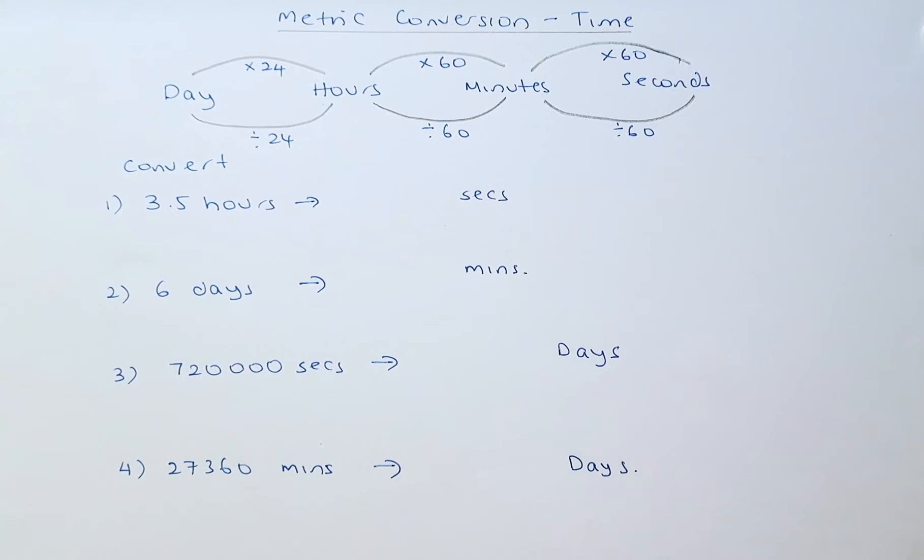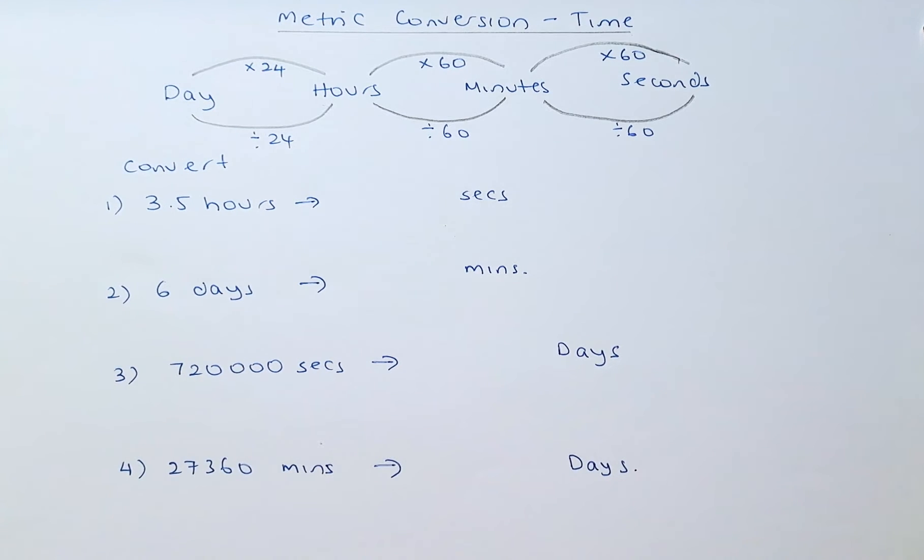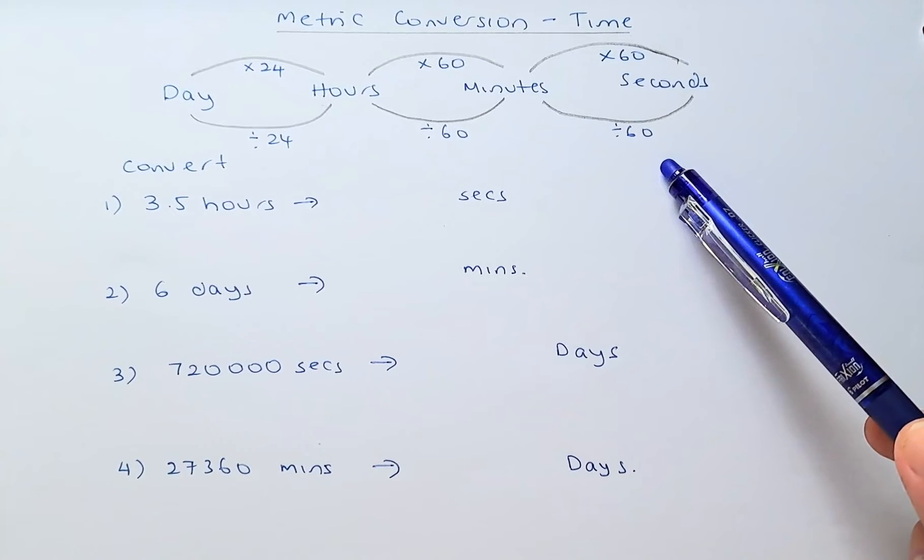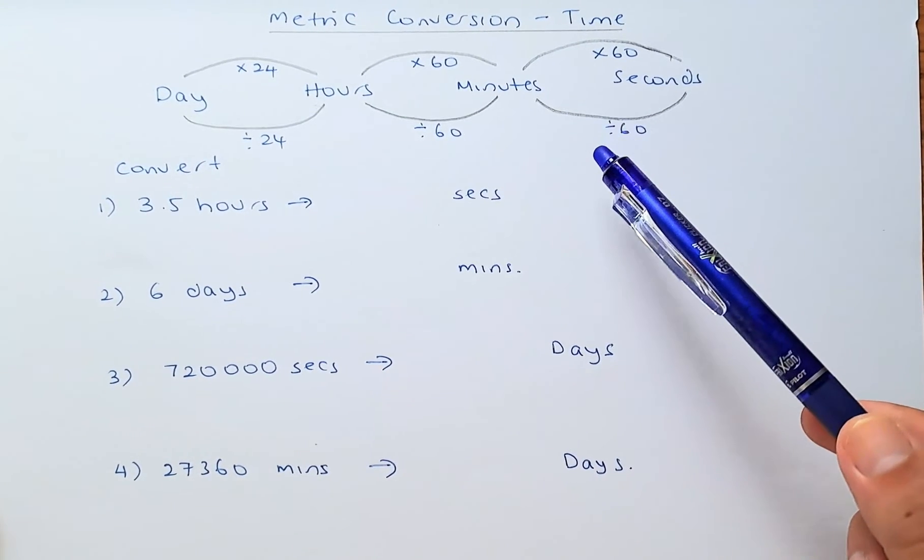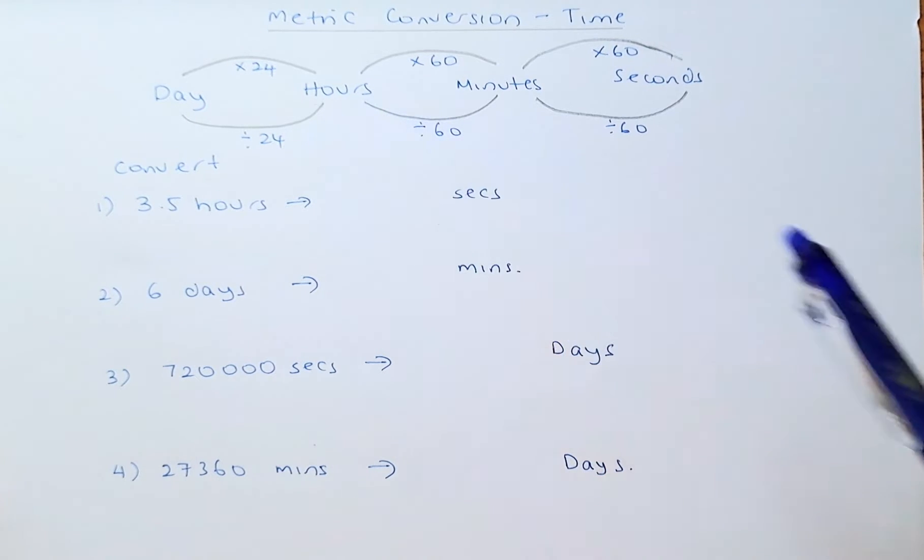To convert from day to hours, you multiply by 24, and from hours to minutes, we multiply by 60, and from minutes to seconds, we multiply by another 60. On the other hand, if we have seconds and we want to convert to minutes, we divide by 60, and then from minutes to hours, we divide by 60, and from hours to day, we divide by 24.